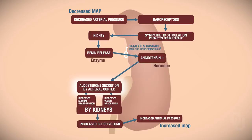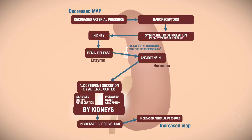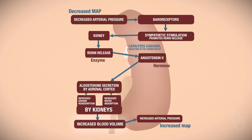When angiotensin II targets the zona glomerulosa, that causes the synthesis and secretion of aldosterone. The function of aldosterone is that it increases sodium reabsorption. If we reabsorb sodium, water follows — so that's going to increase water reabsorption by the kidneys as well. By increasing sodium reabsorption and therefore increasing water reabsorption, blood volume goes up, which then increases arterial pressure.